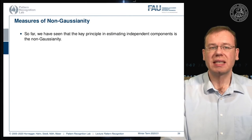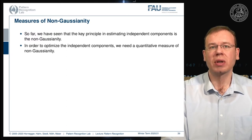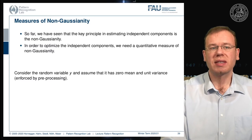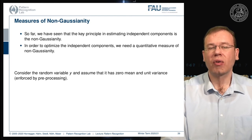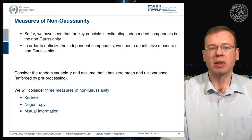The key principle in estimating the independent components is non-Gaussianity. In order to optimize the independent components, we need a quantitative measure of non-Gaussianity. We will consider a random variable y with zero mean and unit variance — enforced by appropriate pre-processing — and look into three measures: kurtosis, negentropy, and mutual information.